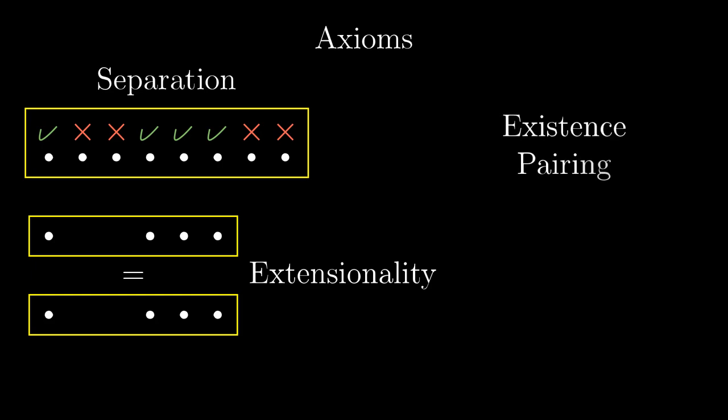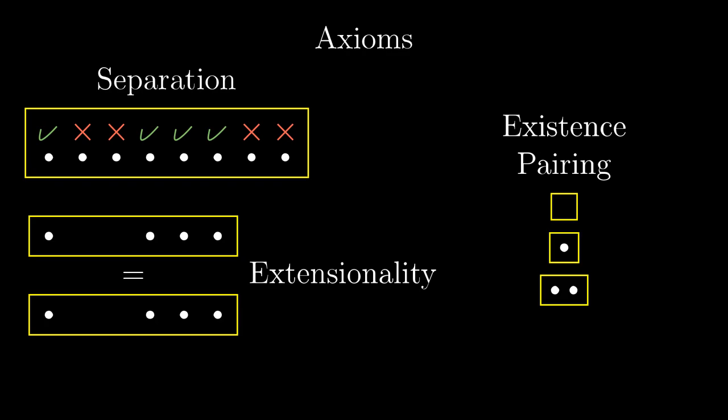The axioms of existence and pairing are capable of creating small sets with 0, 1 or 2 elements. Further axioms can help with creating large sets.